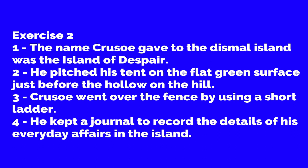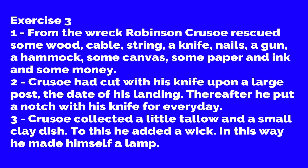Exercise three: Answer the following questions within 25 words. First: What were the items Robinson Crusoe collected from the wrecked ship? Answer: From the wreck, Robinson Crusoe rescued some wood, cable, string, a knife, nails, a gun, a hammer, some canvas, some paper and ink, and some money. Second: How did Crusoe keep track of the number of days on the island? Answer: Crusoe had cut with his knife upon a large post the date of his landing; thereafter he put a notch with his knife for every day.